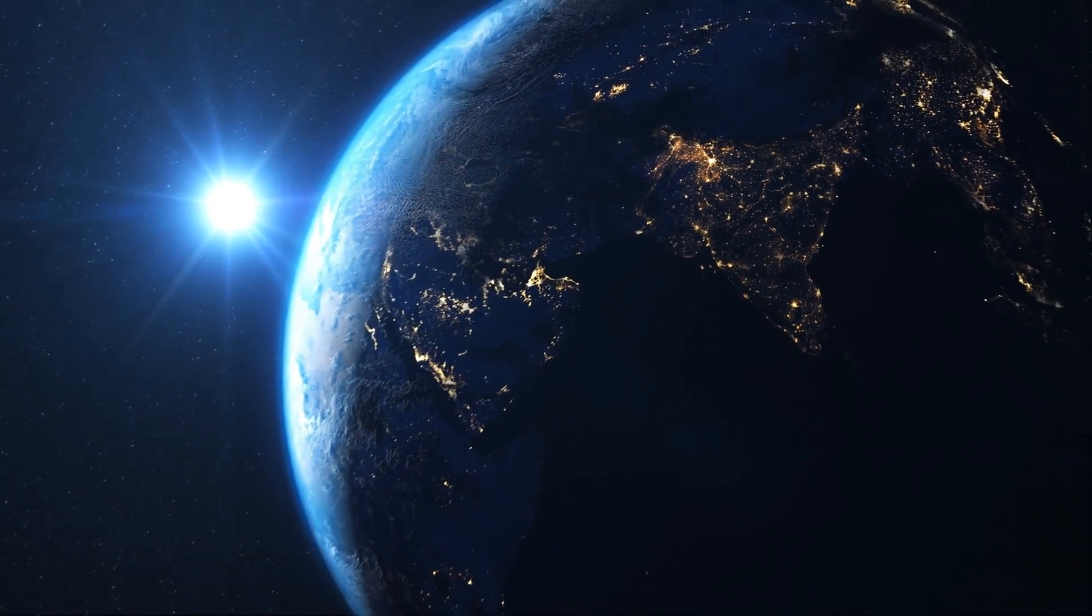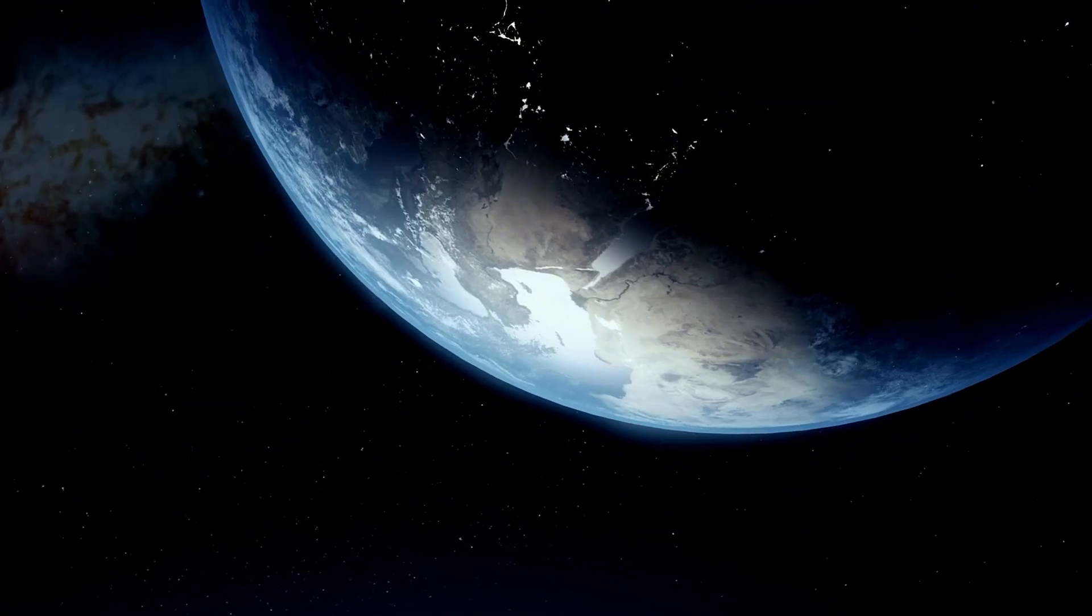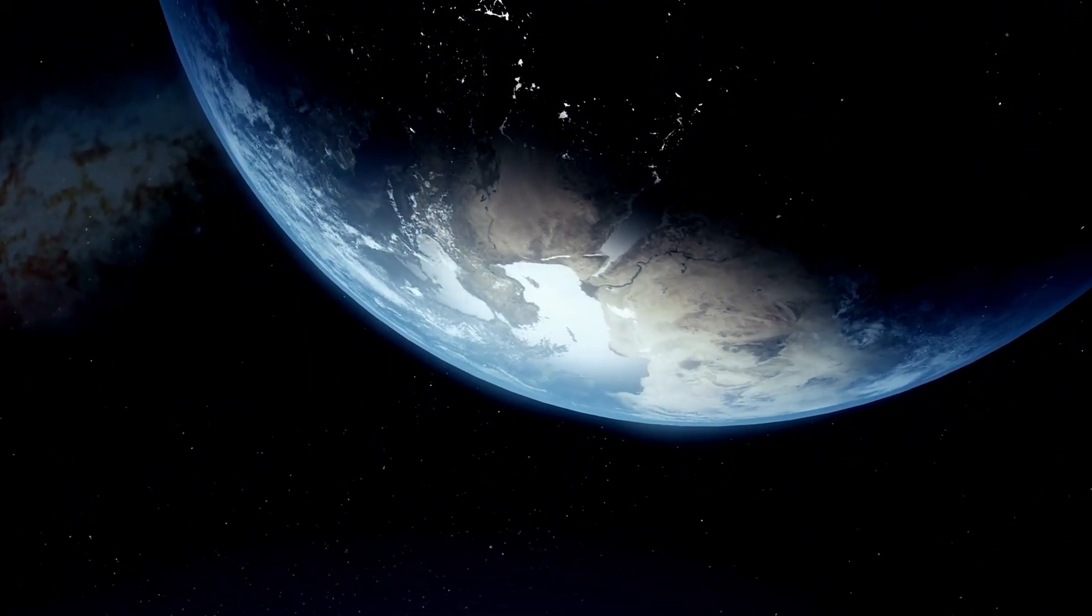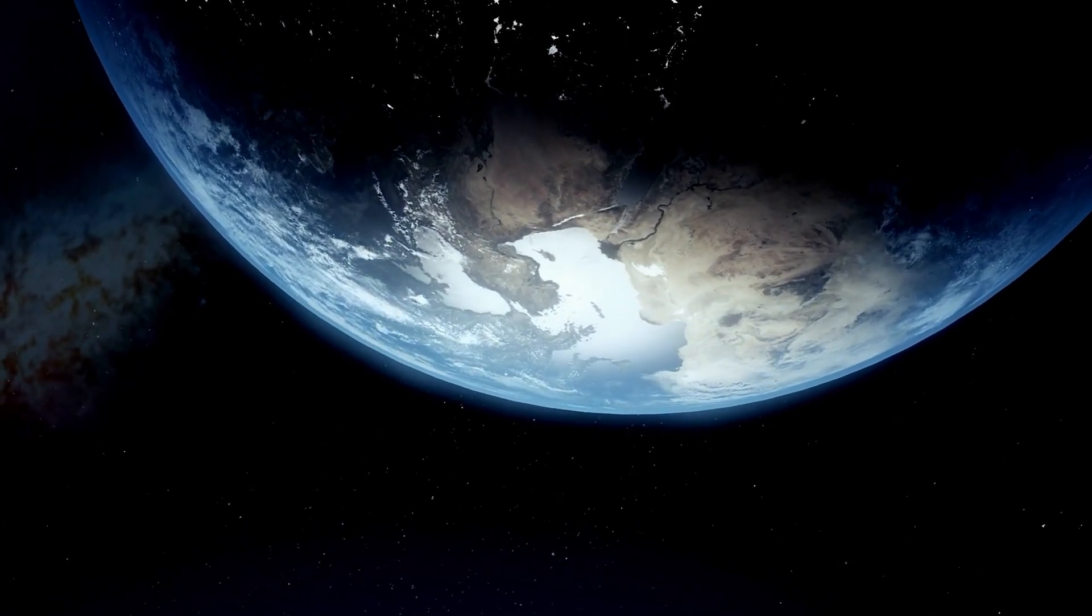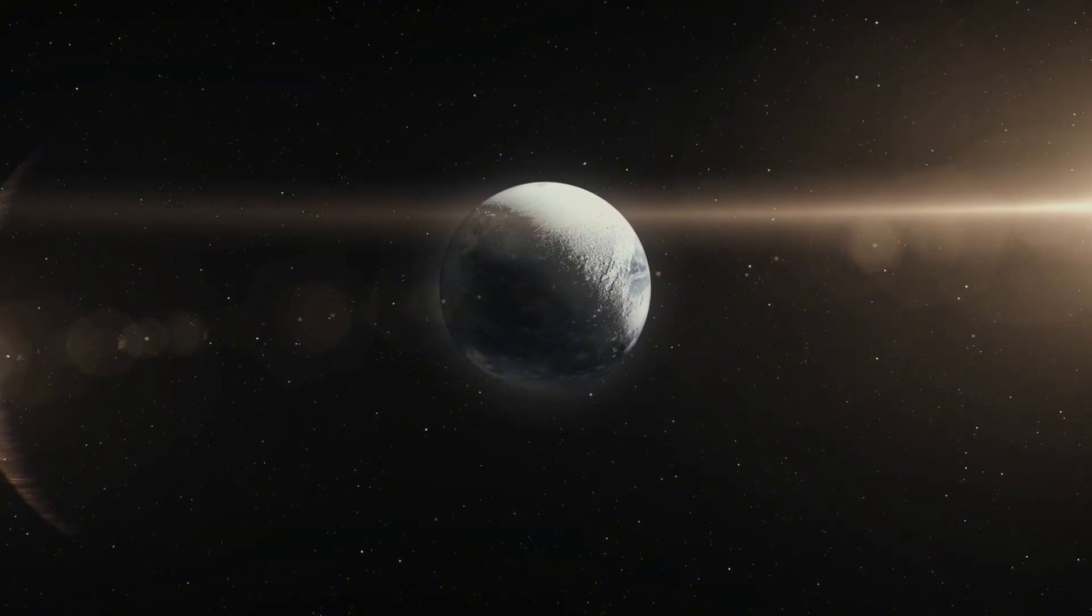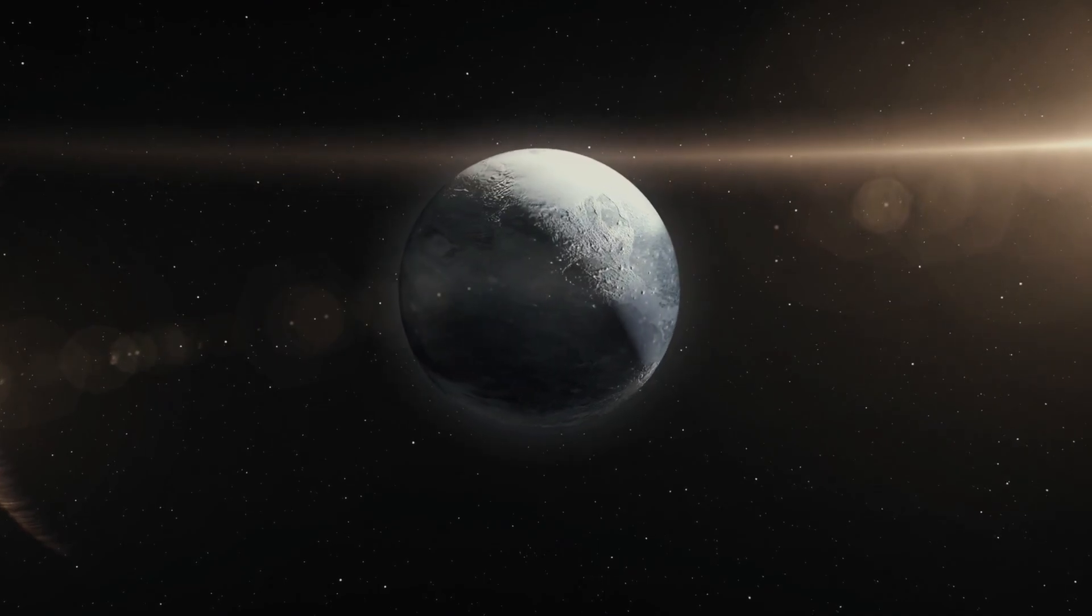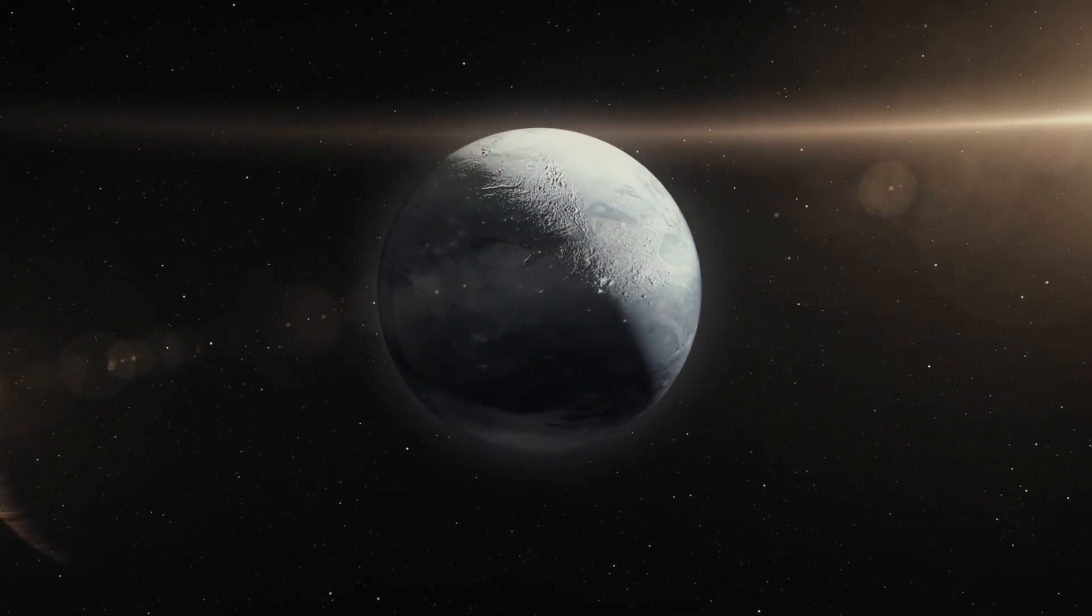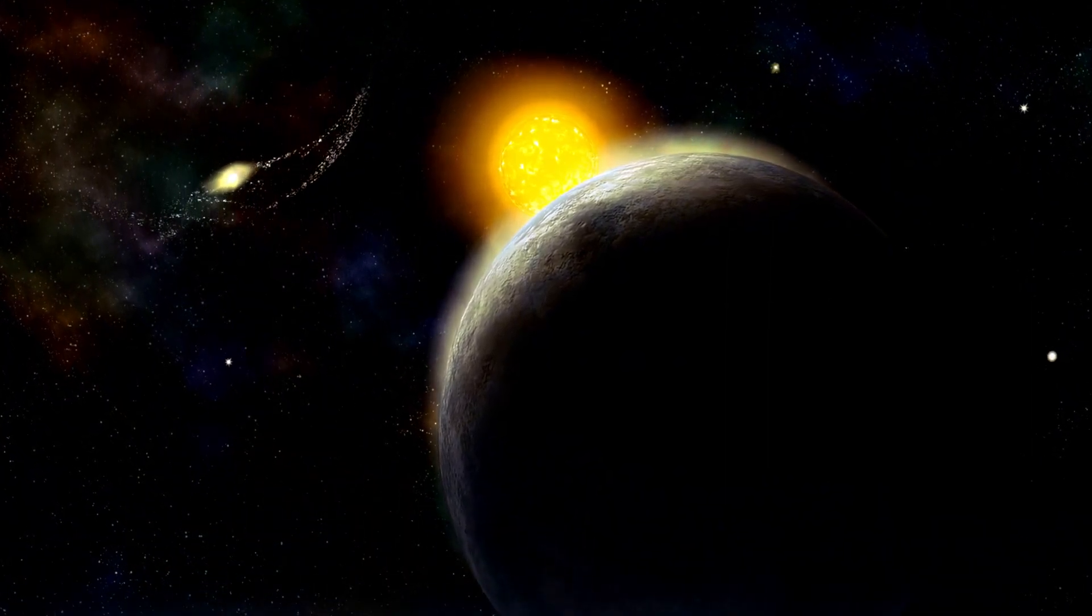However, Proxima b is far from a perfect twin of Earth. One of its most striking features is that it is tidally locked, meaning one side of the planet is in perpetual daylight, while the other is in eternal darkness. This creates a unique environment with extreme temperature differences between the two hemispheres. The region where day meets night, known as the Terminator line, may offer a narrow twilight zone with conditions moderate enough to support life.